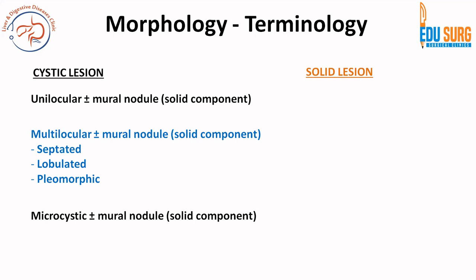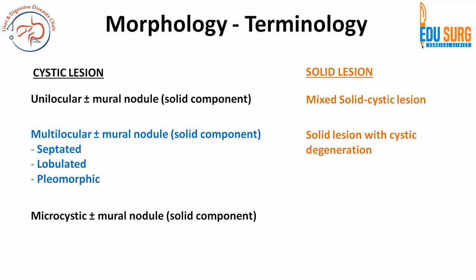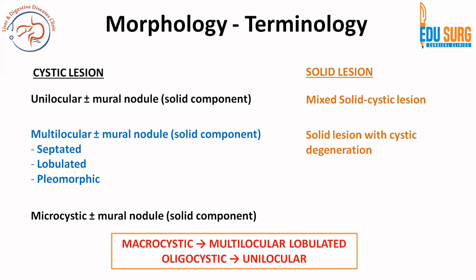The pancreas also houses solid tumors. If there is a solid lesion, you can have a mixed solid-cystic lesion or a solid lesion with cystic degeneration. So when someone is talking about a cystic neoplasm with a solid component, it can be mixed solid-cystic or a solid lesion with cystic degeneration. The macrocystic term is basically multilocular lobulated, and oligocystic can be unilocular.